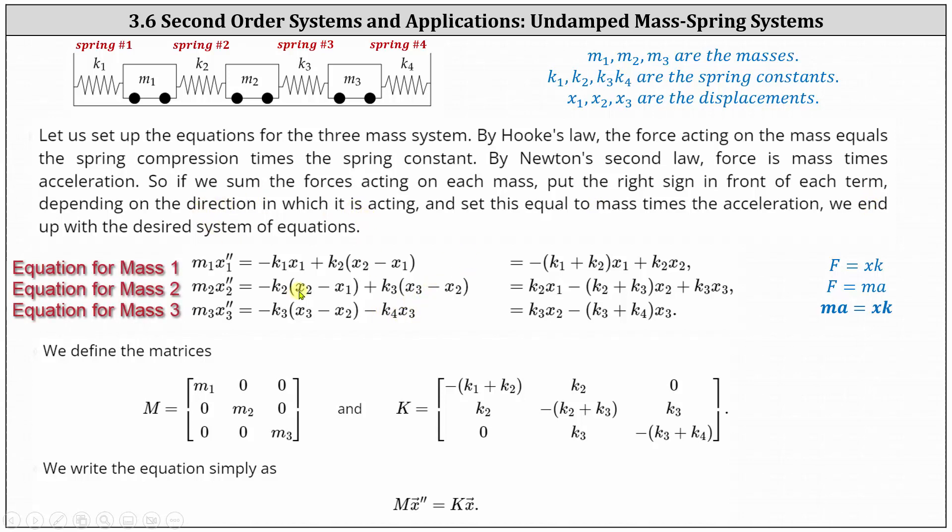Let's go through each equation. For the first equation on the left, we have M1 times X1 double prime, which is mass times acceleration, which is equal to on the right, we have negative K1 times X1, plus K2 times the difference of X2 and X1.